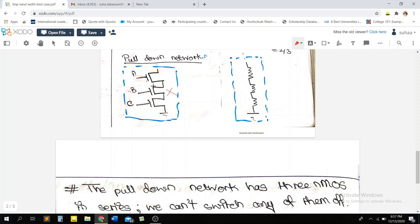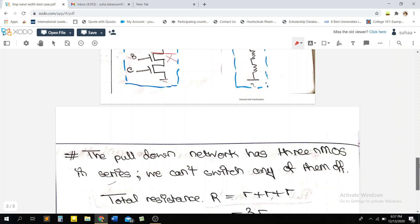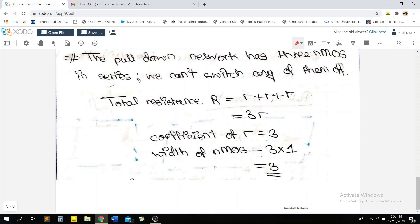And we can't work with a broken circuit, so the current has to flow somewhere. And that's why all of the three NMOS, they have to be on. And if they are on, then since each has a resistance of R, the total resistance will be 3R. Our coefficient is basically 3, as you can see here. And the width of a general NMOS is 1. So our total width is 3.